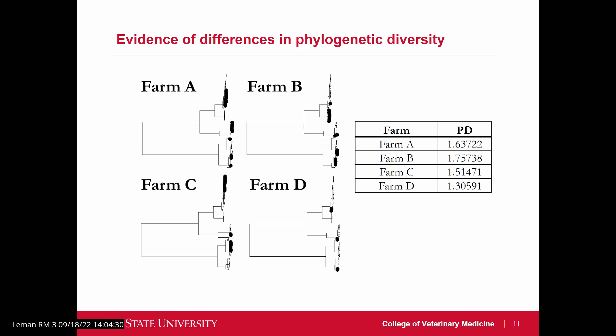Additionally, we were able to map the diversity onto the HA trees, and based on the branch length, you can come up with a measure for phylogenetic diversity. Because these differ between the four farms, it indicates that farm-level factors are influencing the diversity in your influenza A population. That means there might be things you can change about how you're running a farm in order to reduce that.